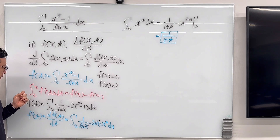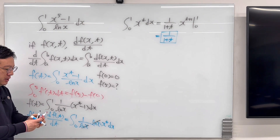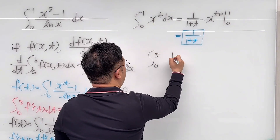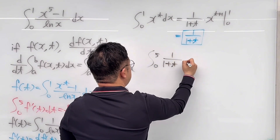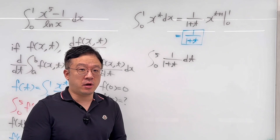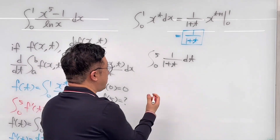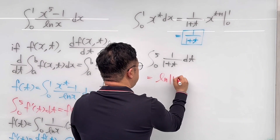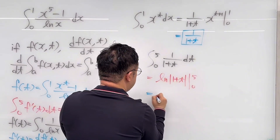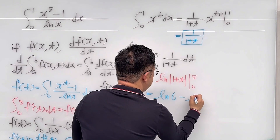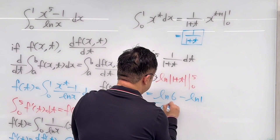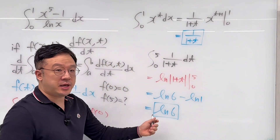But then again, we need to work on the integral from 0 to 5 of f prime of t dt, so we should be working on the integral from 0 to 5 of 1 over (1 plus t) dt. The antiderivative of 1 over (1 plus t) is ln of (1 plus t), so this is the same as ln of (1 plus t) from 0 to 5. This is the same as ln of 6 minus ln of 1. Since ln of 1 is equal to 0, this whole thing is the same as ln of 6. So the answer for this question is ln of 6.